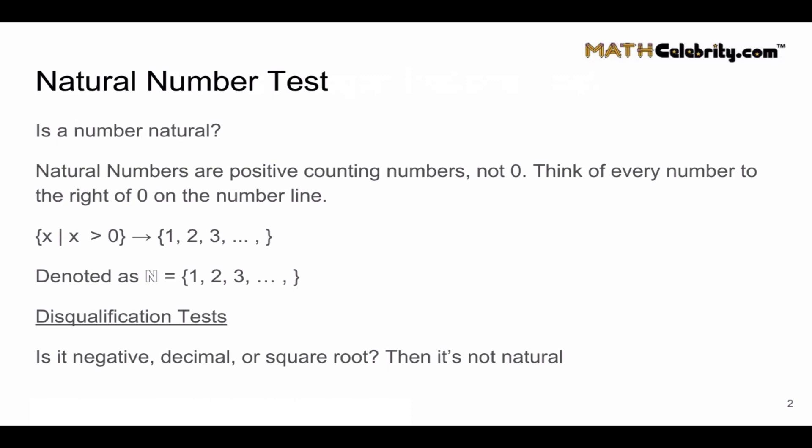Here are some quick disqualification tests I can perform to say no, it's not natural: Is it negative? Then it's not natural. Is there a decimal? It's not natural. Is there a square root? Then it's not natural. And of course, is it zero? Then it's not natural. If you want to move quickly, and this is how some detectives work, sometimes they try to eliminate the negatives because that moves the test faster.